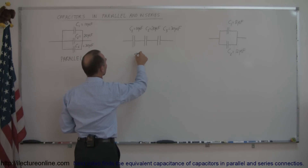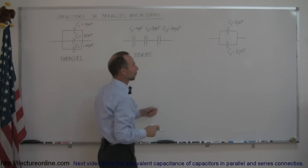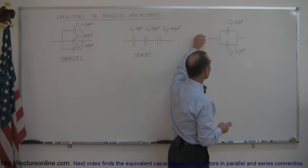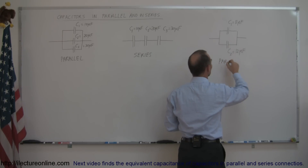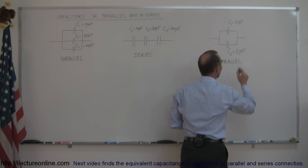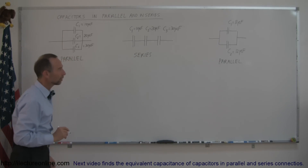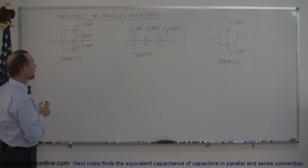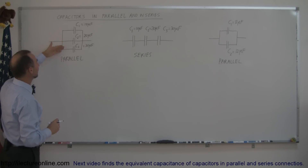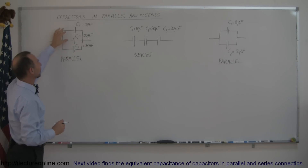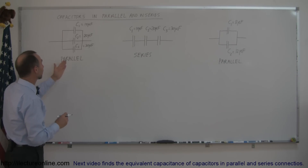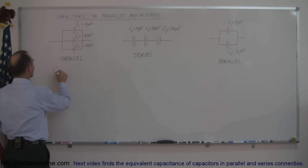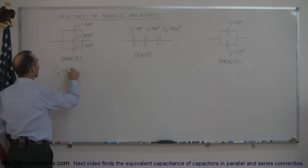Here's a special case — a parallel connection with only two capacitors. The charges still have a choice of which way to go, so this is also a parallel connection. When capacitors are hooked up in parallel, it effectively increases the size of the plate. You can replace all three capacitors with a single capacitor whose size equals all three combined, meaning the total capacitance is simply the sum: C_total = C1 + C2 + C3.